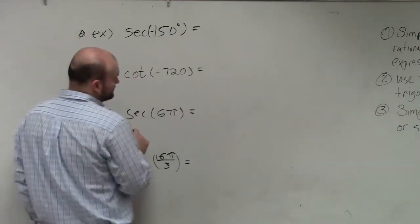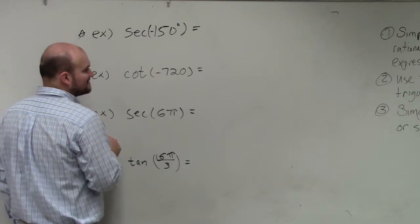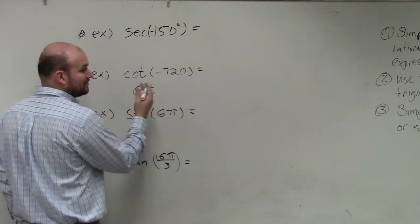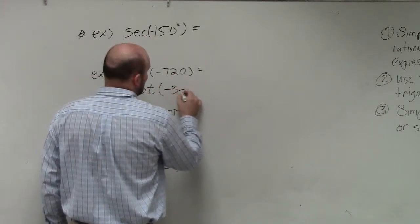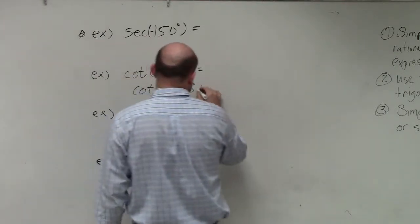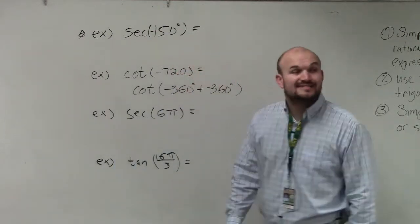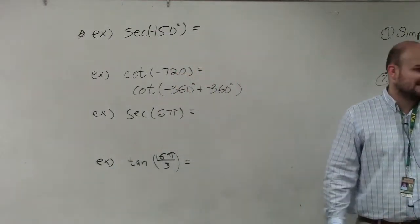So in this case, what you can see is I can rewrite this. Any time I have an angle greater than 2π or 360, I'm going to write it as what we call a period as an aid. So I'm going to write it as a sum of periods, as many as I can.